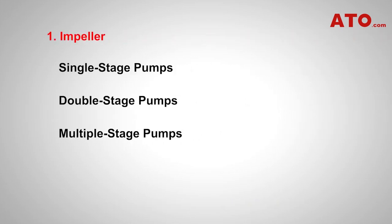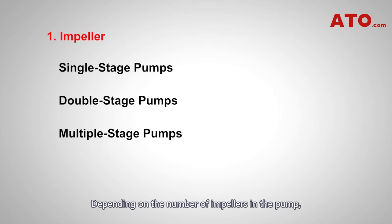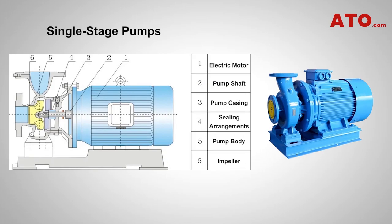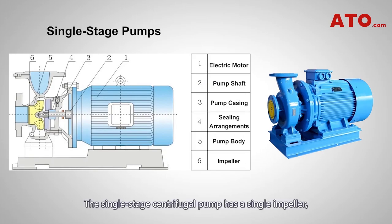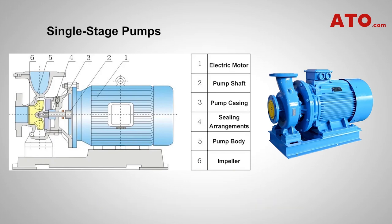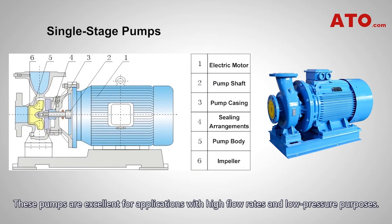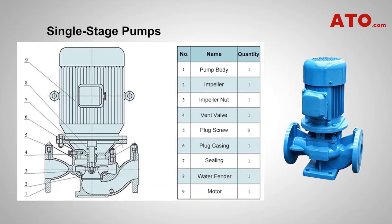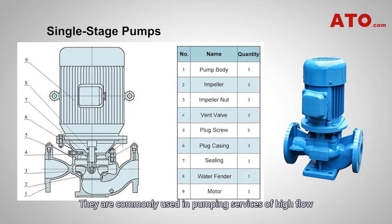Depending on the number of impellers in the pump, pumps can be classified as per the following. Single stage pumps: the single stage centrifugal pump has a single impeller, featuring a simple design and easy maintenance. These pumps are excellent for applications with high flow rates and low pressure purposes, commonly used in pumping services with high flow and total dynamic head (TDH) from low to moderate ranges.